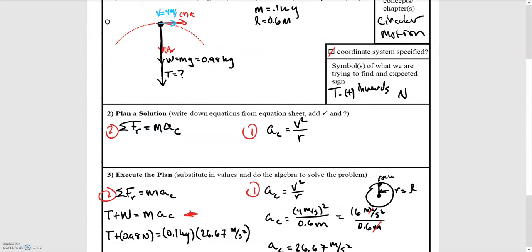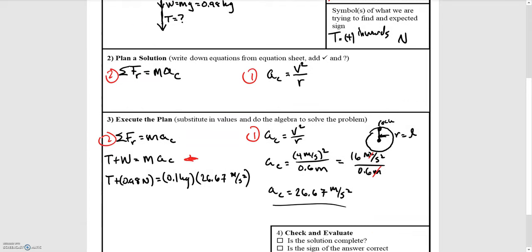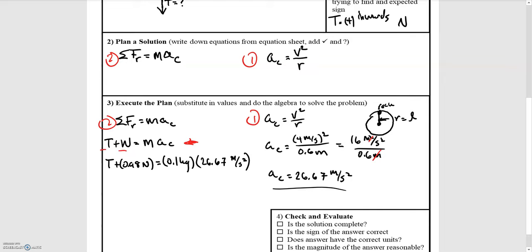This is different than what we typically do for x and y directions, where downwards for the y direction is usually negative. But in this case, we're pointing towards the center of the circle, which we've called positive. So that's why these are both positive values. That's a spot where you can easily trip yourself up, so just a word of caution there.